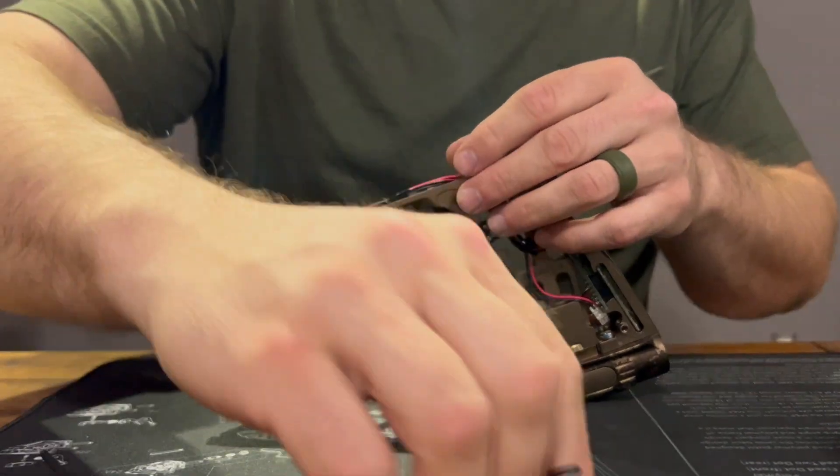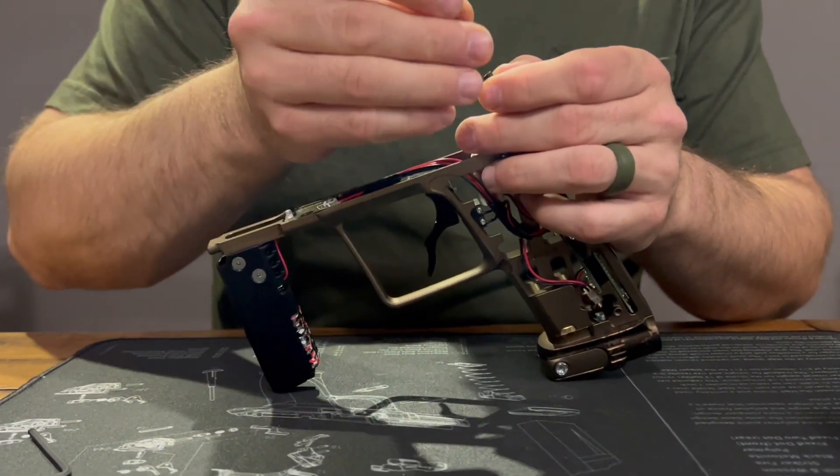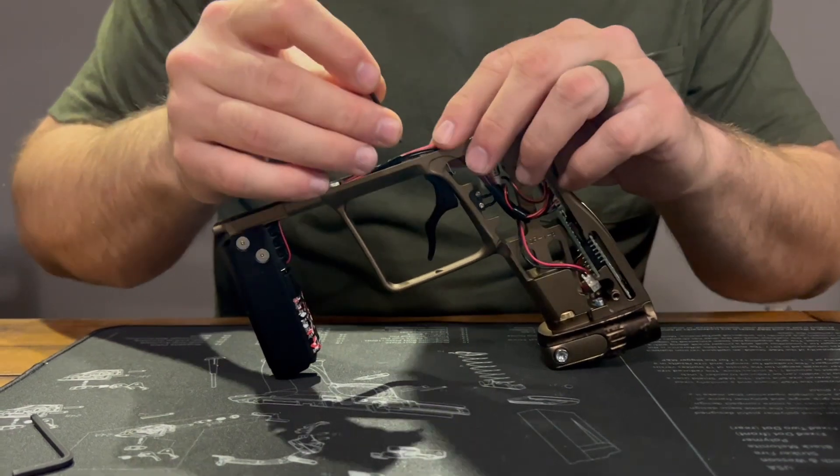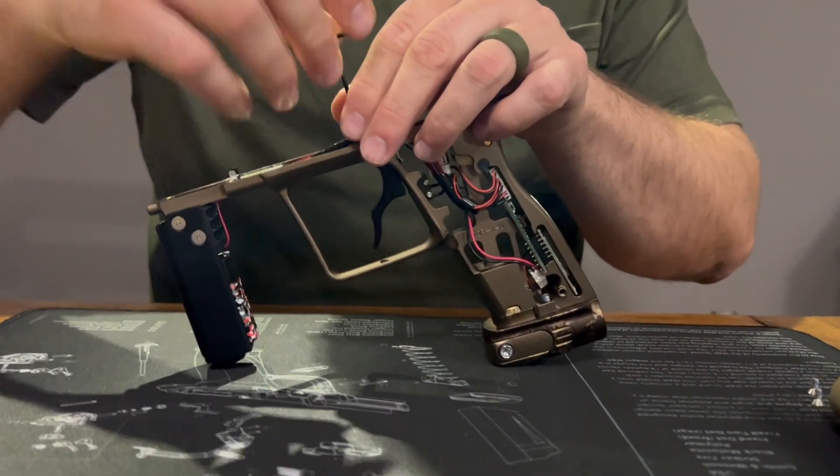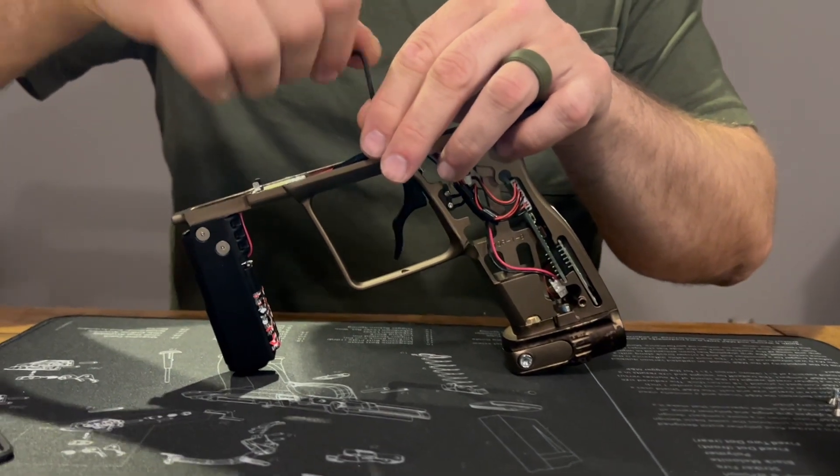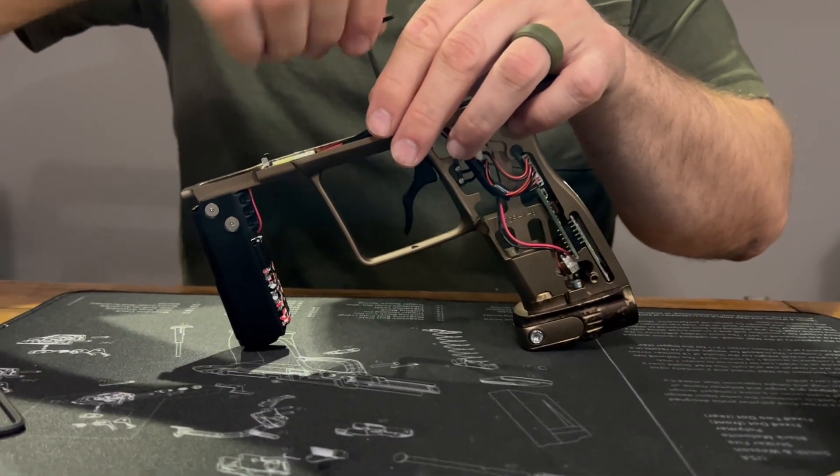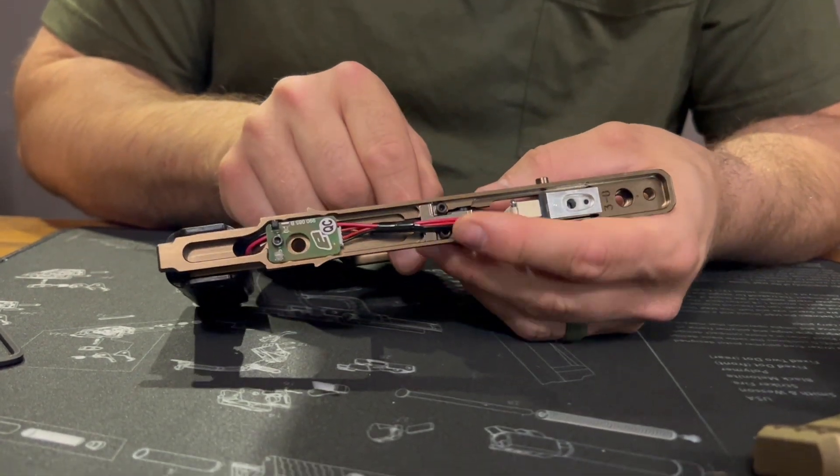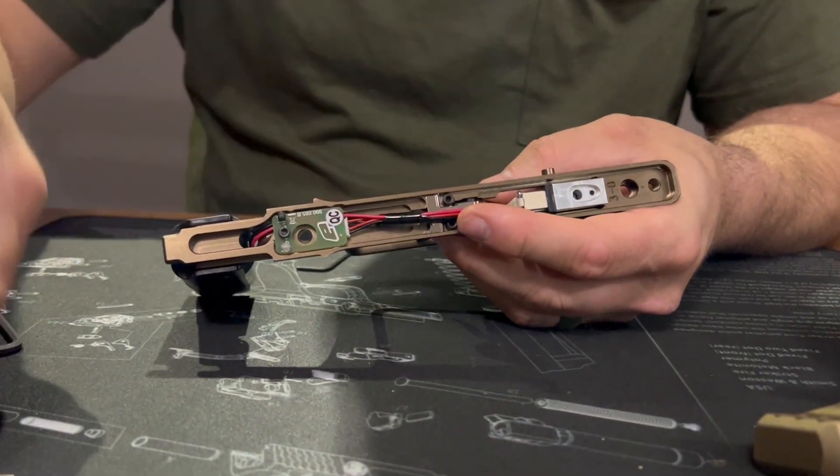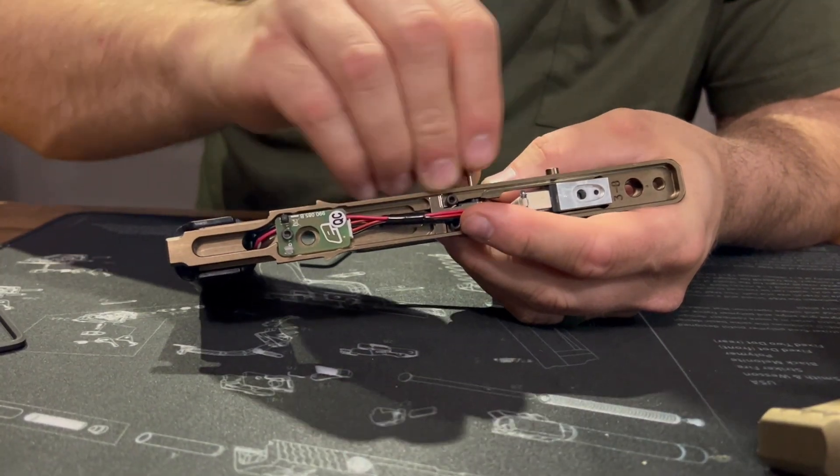What I like to do before I tighten anything down completely is just put everything in. I like to leave it kind of just loose. You want to make sure everything functions before you go and tighten everything down and put it all back together, just in case you have to make some minor adjustments. Then you're going to put your trigger pin back in.